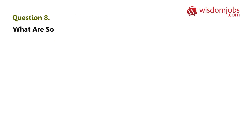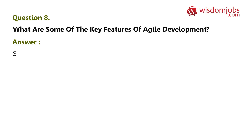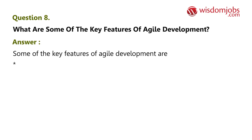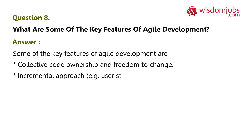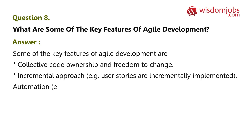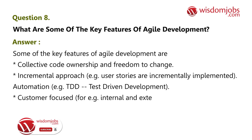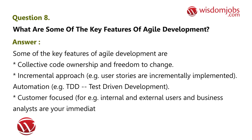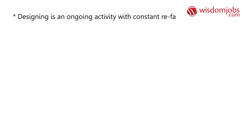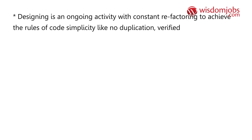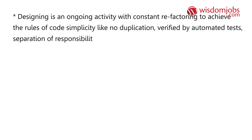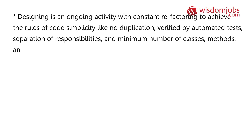Question 8: What are some of the key features of agile development? Answer: Key features include collective code ownership and freedom to change; an incremental approach where user stories are incrementally implemented; automation such as TDD (test-driven development); customer-focused development where internal and external users and business analysts are your immediate customers; design must be simple; and designing is an ongoing activity with constant refactoring to achieve code simplicity — no duplication, verified by automated tests, separation of responsibilities, and minimum number of classes, methods, and lines.